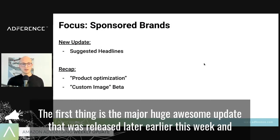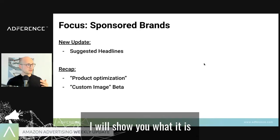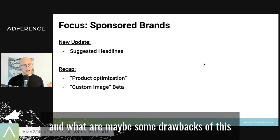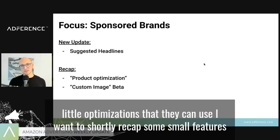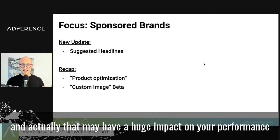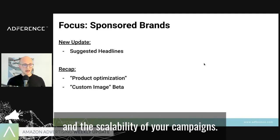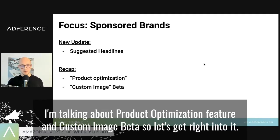Today's focus is sponsored brands. There are three things I want to talk about. The first is the major, huge, awesome update released earlier this week — it's about suggested headlines. I'll show you what it is, how you can use it, and what the drawbacks might be. I also want to recap two smaller features: the product optimization feature and the custom image beta.